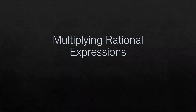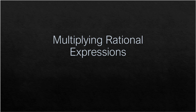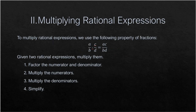We now know how to simplify rational expressions, so it's time to operate on them. We will start with multiplying rational expressions. As I said in my previous video, the rules we use in simplifying fractions are the same rules we use in operating on rational expressions. To multiply rational expressions, we use the following property: a/b times c/d equals (a·c)/(b·d) — multiply the numerators together over the product of the denominators.